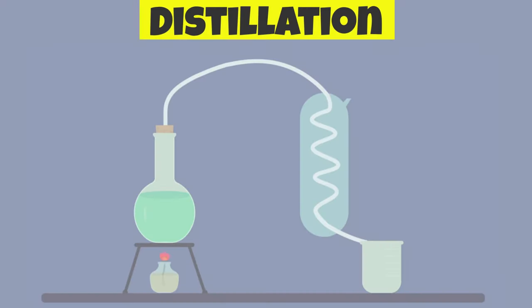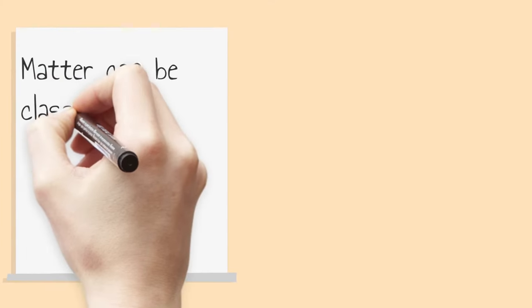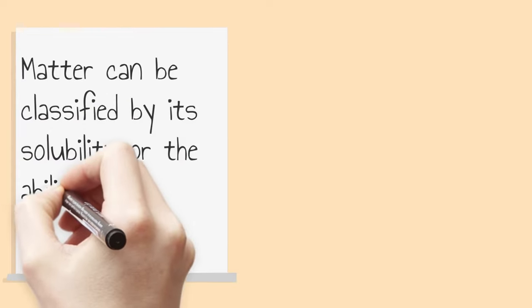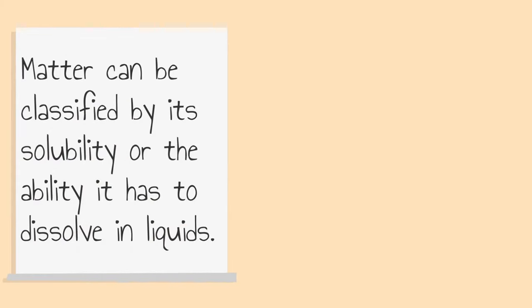To separate both substances, you would have to evaporate all of the water. Matter can be classified by its solubility, or the ability it has to dissolve in liquids.